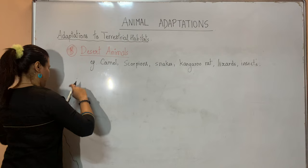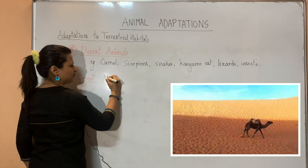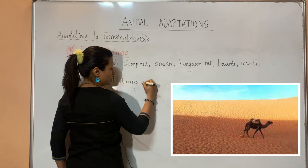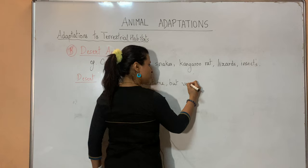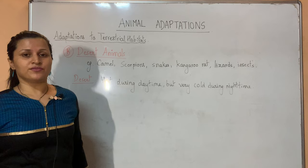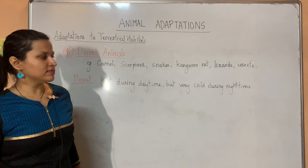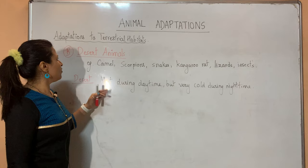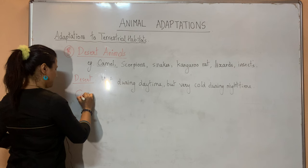In the desert it is very hot during daytime but extremely cold at night because the land tends to lose its heat very quickly. We are going to look at all the characteristic features and adaptations of the camel, which is called the ship of the desert.